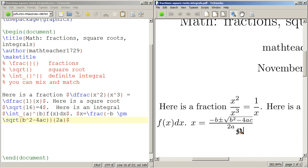And there you can see the quadratic formula. Negative b plus minus b squared minus 4ac all over 2a. Hope this was helpful. Have fun typesetting math. Thank you.